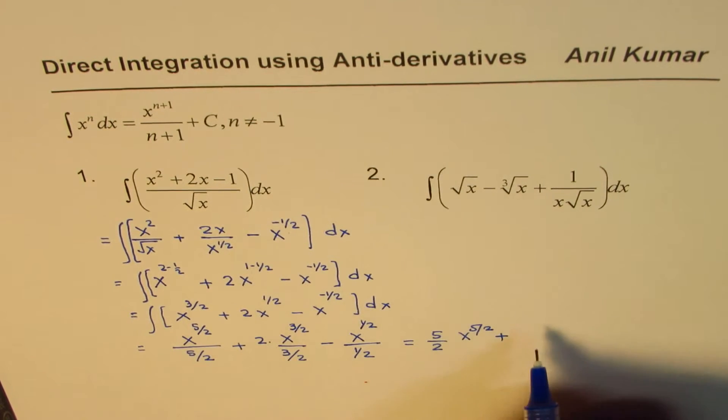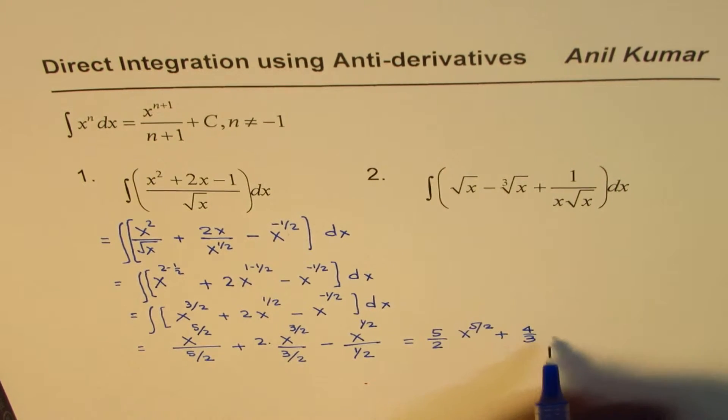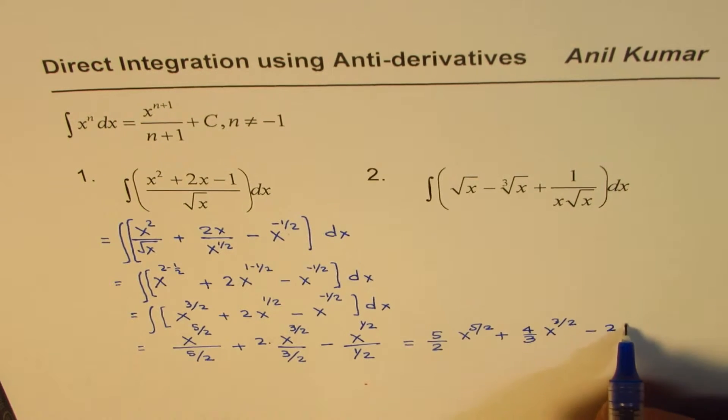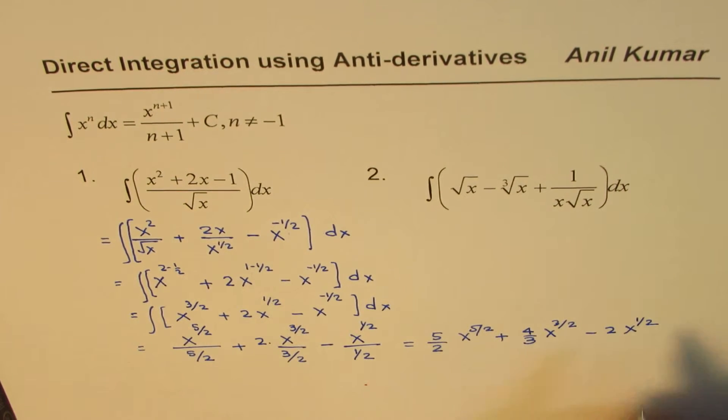it becomes 4 over 3, x to the power of 3 over 2, and then when you do this, you get minus 2 square root x or x to the power of half, either way. So that becomes your solution. So that is how you need to do it.